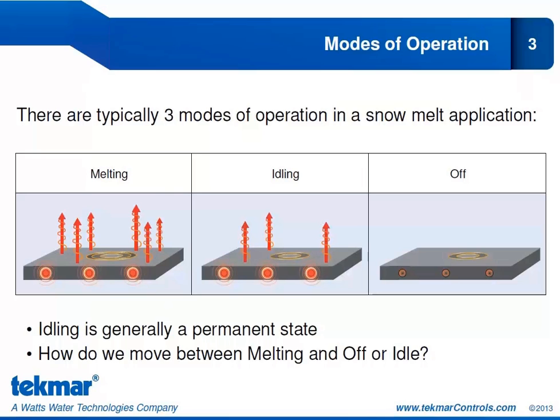Idling is generally a permanent state — it's not something we would start and stop on a semi-regular basis. It is something that would be in effect throughout the snowmelt season. The question then is how do we move between these states? How do we go from idling to melting to off, or from off directly to melting? We'll look at the ways we can enable and disable the snowmelt system.